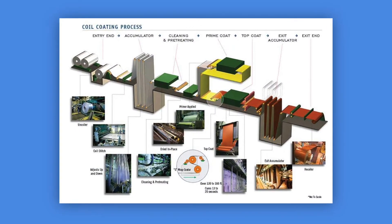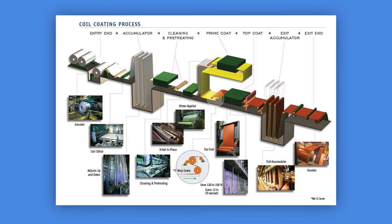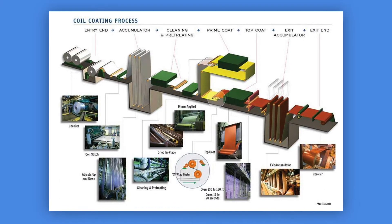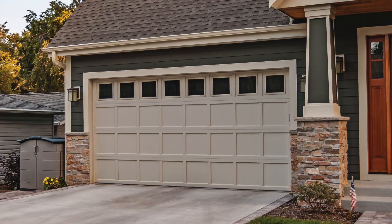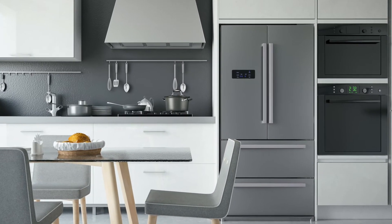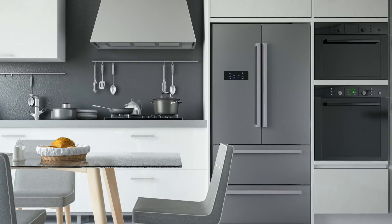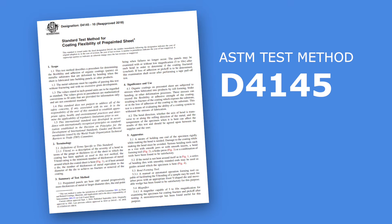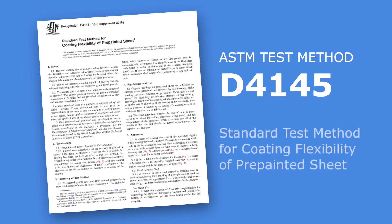Coil coating is an automated process used to produce cost-effective, environmentally friendly, quality products. When coils are fabricated into a product such as metal garage doors, metal building panels, and refrigerators, the pre-painted metal must demonstrate suitable flexibility as the final part of the fabrication process. This video demonstrates how to perform a T-Bend test in accordance with ASTM test method D4145, standard test method for coating flexibility of pre-painted sheet, that will determine the flexibility of a pre-painted sheet.